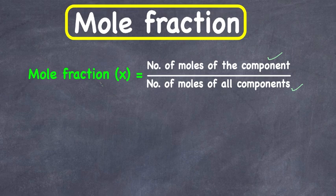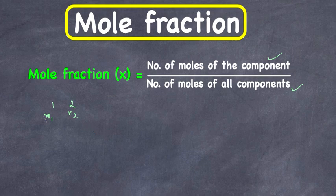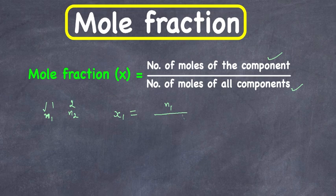Let's say we have a binary solution which is made up of two components — component one and two. The number of moles of component one and component two are n1 and n2. If we want to calculate the mole fraction of component one, it can be written as x1.